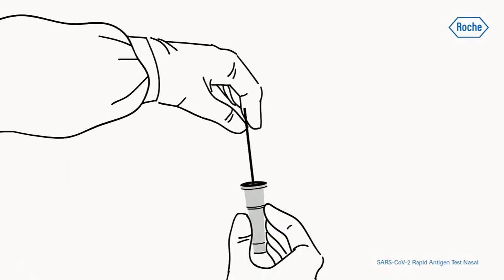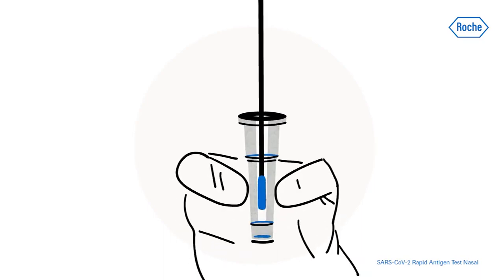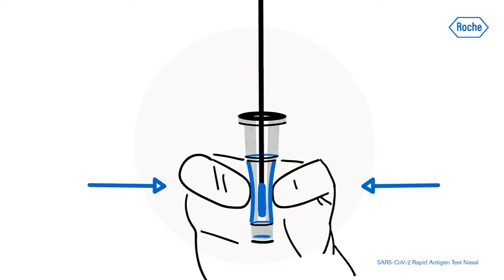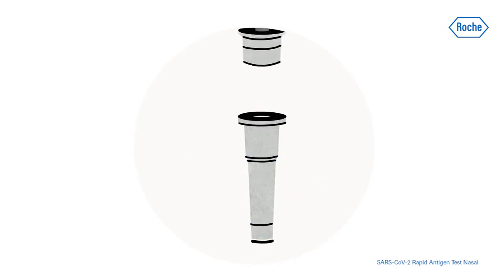Insert the swab into an extraction buffer tube. While squeezing the buffer tube, stir the swab more than 10 times. Remove the swab while squeezing the sides of the tube to extract the liquid from the swab. Press the nozzle cap tightly onto the tube.